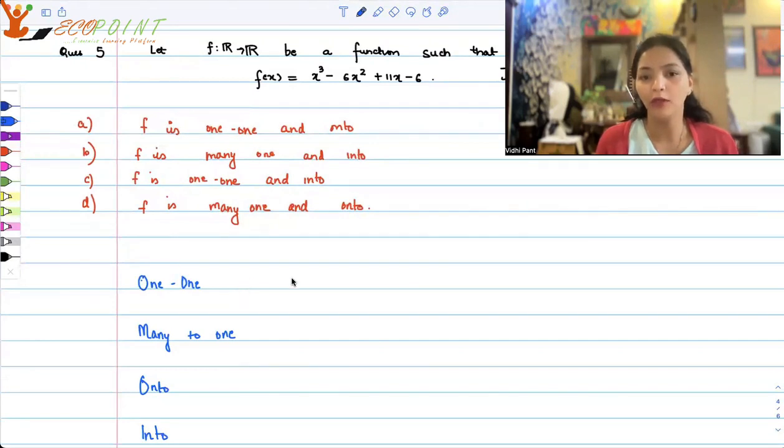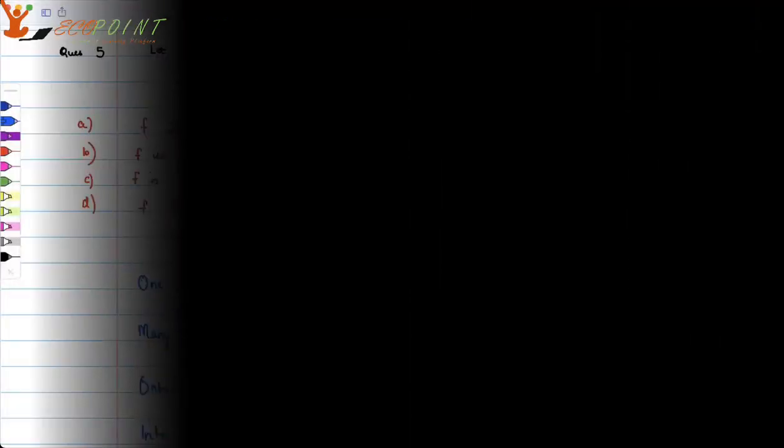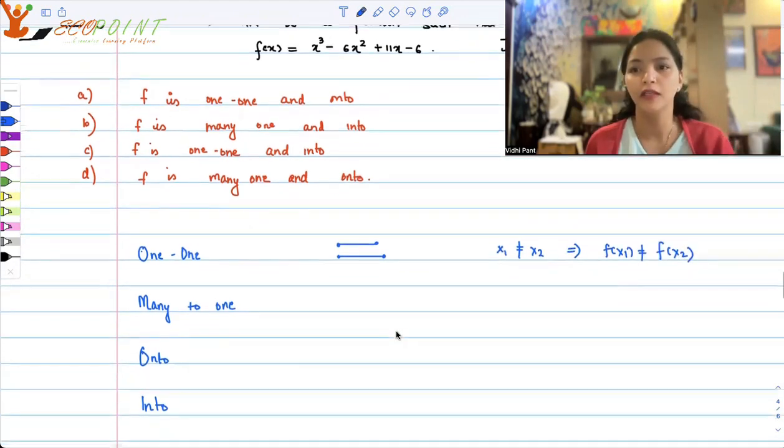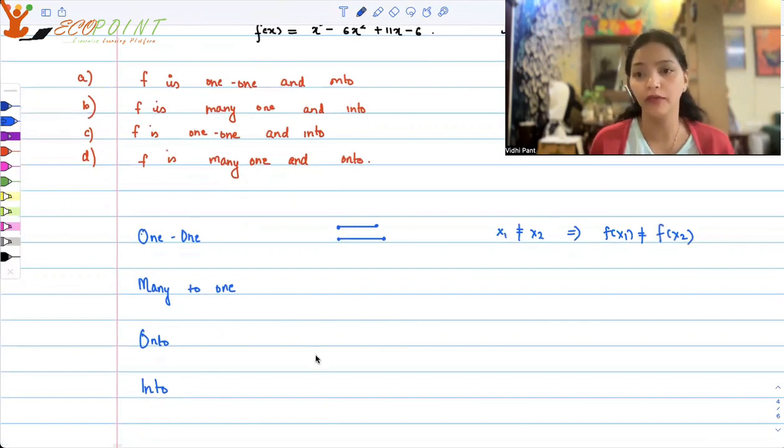So a 1 to 1 function, as the name suggests, distinct inputs give you distinct images. So no two inputs can go to just one single output. In terms of the definition, it basically means that x1 is not equal to x2 should imply f(x1) is not equal to f(x2). That is, different inputs are giving you different outputs.